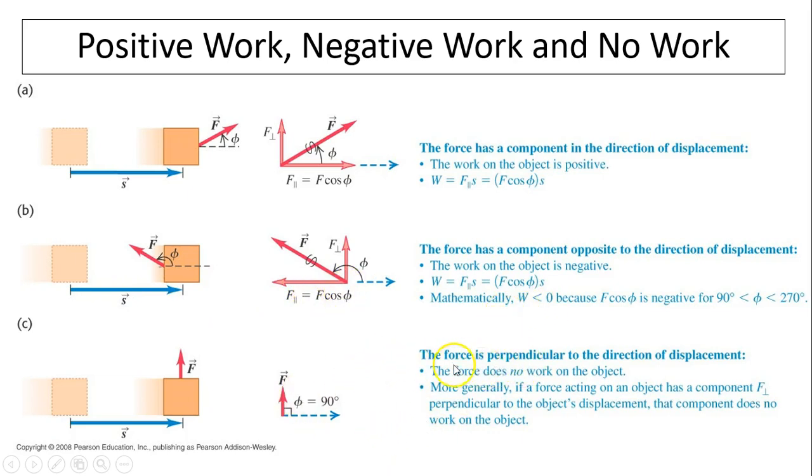When is zero work? Zero work occurs when the force is perpendicular to the direction of displacement. For example, normal force and gravity would do zero work because they are both perpendicular to the displacement.